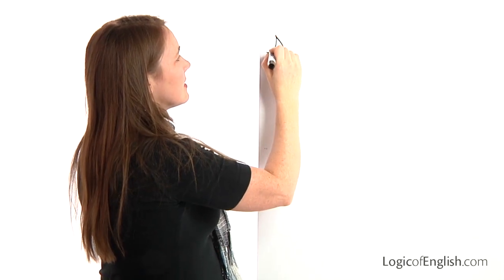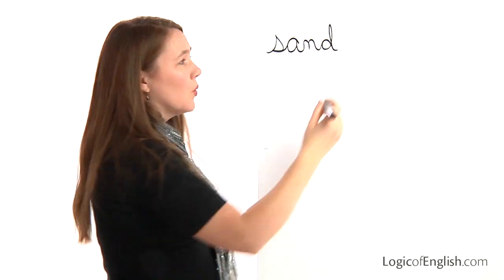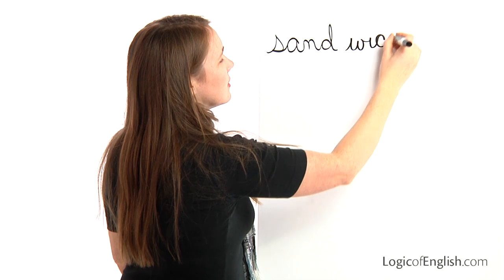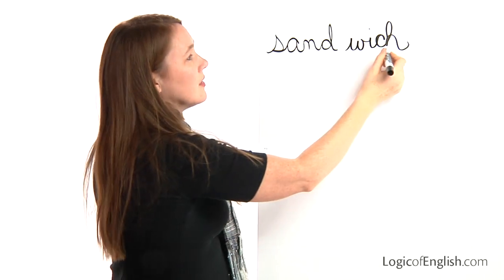The next word is 'sandwich.' I will have a sandwich for lunch. How many syllables? Two. The first syllable is 'sand': S, a, n, d. The second syllable is 'which': W, i, ch. Now help me write it: S, a, n, d — W, i, ch. Do we have anything to mark? Yes, we'll underline the ch.